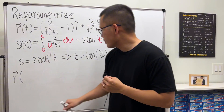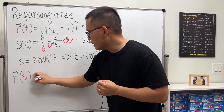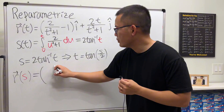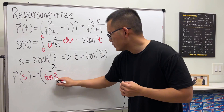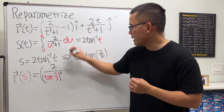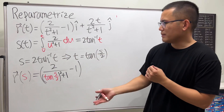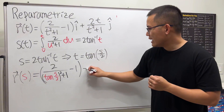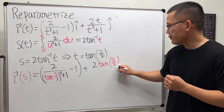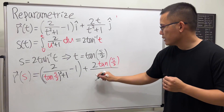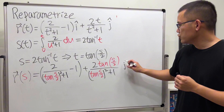Now r is no longer a function of t but of s, so we write r of s. The first component is 2 over (tan(s/2))² + 1, minus 1. The second component is 2 times tan(s/2) over (tan(s/2))² + 1, in the j direction.